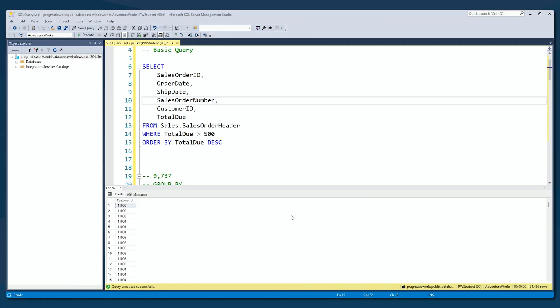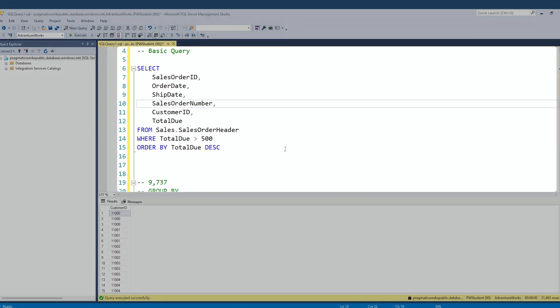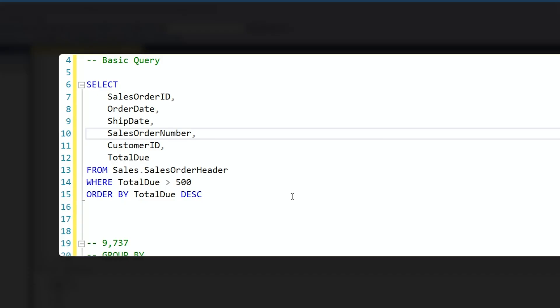I'm currently in SQL Server Management Studio and I've got some demos here for us to go through. We're going to just start with a basic query. I have a sales order header table here and that is going to be my fact table. I am returning sales order ID, order date, ship date, sales order number, customer ID, and total due here.